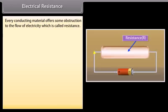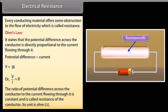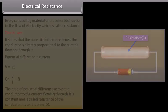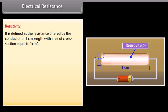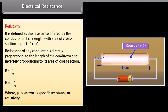Electrical resistance: Every conducting material offers some obstruction to the flow of electricity, called resistance. Ohm's law states that the potential difference across the conductor is directly proportional to the current flowing through it: V = IR, or V/I = R. The ratio of potential difference to current is constant and is called resistance; its unit is ohm. Resistivity is defined as the resistance offered by a conductor of 1 cm length with area of cross section equal to 1 cm². Resistance of any conductor: R = ρL/A, where ρ is the specific resistance or resistivity.